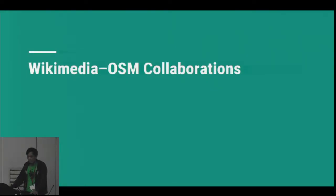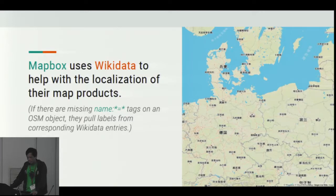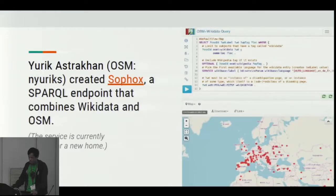Some collaborations that have happened between Wikimedia and OSM communities — these are just some examples. Mapbox uses Wikidata to help with the localization of their map products, so if a place node or POI doesn't have complete name tags, it pulls these labels from corresponding Wikidata items. Uri Atraksan created Sophox, a SPARQL endpoint that combines Wikidata and OSM. Currently this is not online, but he's looking for sponsors to help power this service.